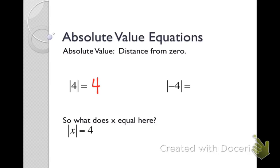Likewise, the distance from negative four to zero on a number line is also four. So anytime you're taking the absolute value of a number, you're just going to take it out and make it positive. If it was positive, it'll stay positive. If it was negative, you're going to make it positive.